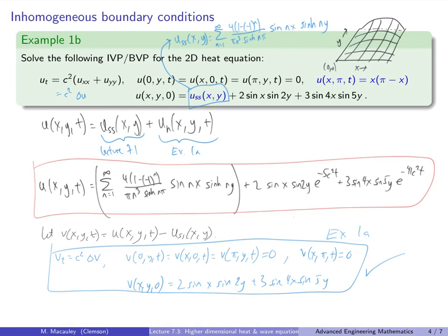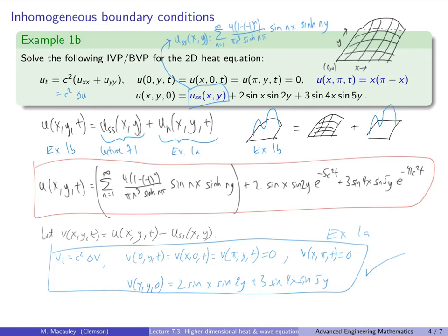So solving the related homogeneous equation is basically just doing a change of variables where we subtract off the steady state solution. The picture is: the solution to example 1b equals the steady state solution (from lecture 7.1) plus the solution with homogeneous boundary conditions (example 1a).